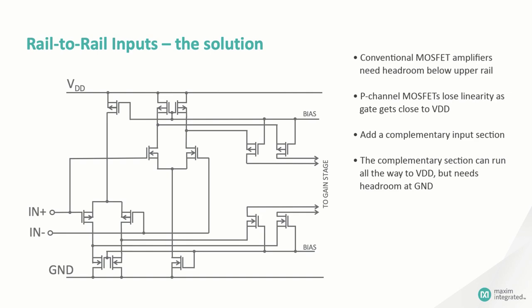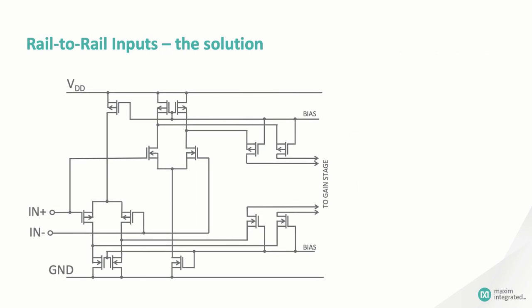Yeah, except for one thing. Now instead of one input offset, you gotta worry about two. Each input stage has its own input offset. As the common mode voltage moves from low to high, the offset voltage shifts from being dominated by the P-channel FETs to being dominated by the N-channel FETs. Now, that doesn't mean you should avoid amplifiers with rail-to-rail inputs, but it does mean that you may have to figure out how to compensate for the unique input offset in some applications.